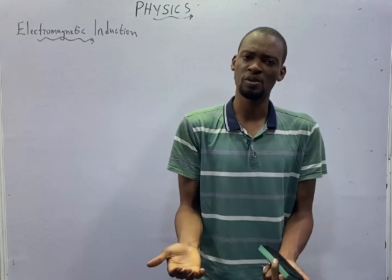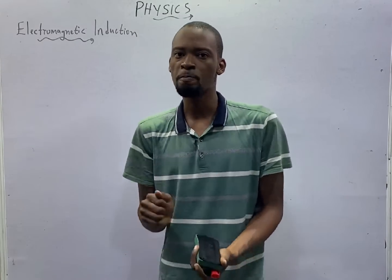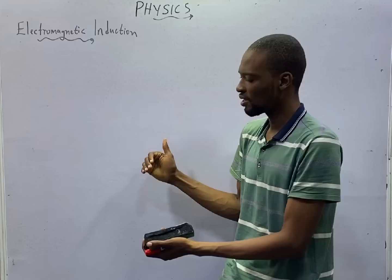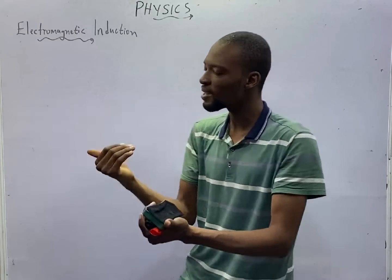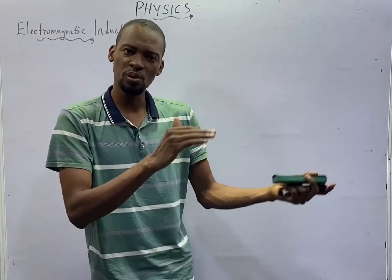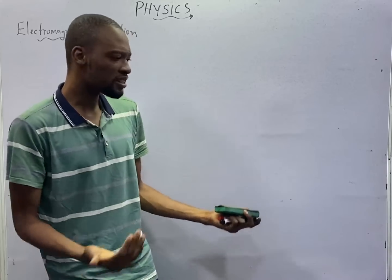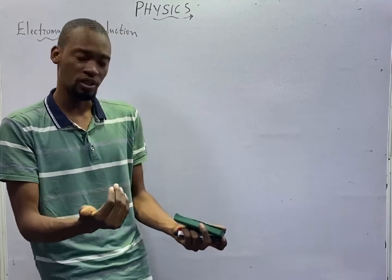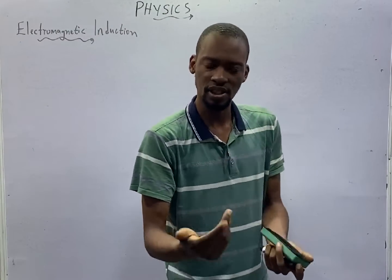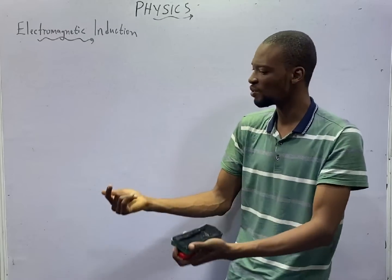Electromagnetic induction is all about a magnetic field interacting with electric circuits to produce EMF. When there is relative motion between a conductor and a magnetic field, EMF is induced.